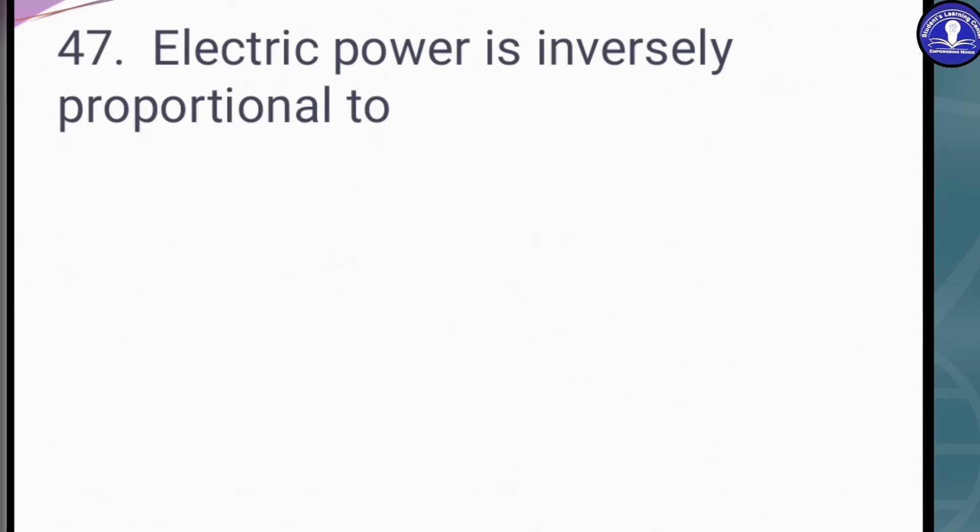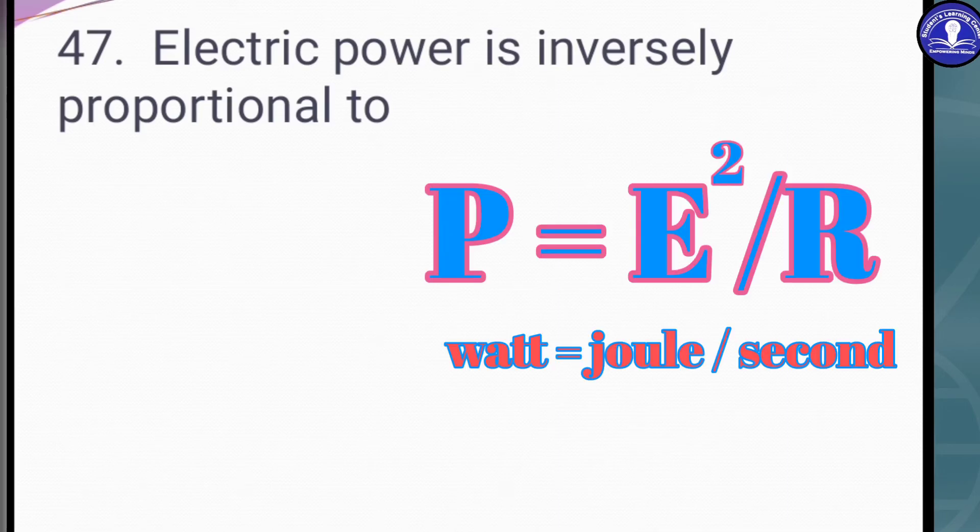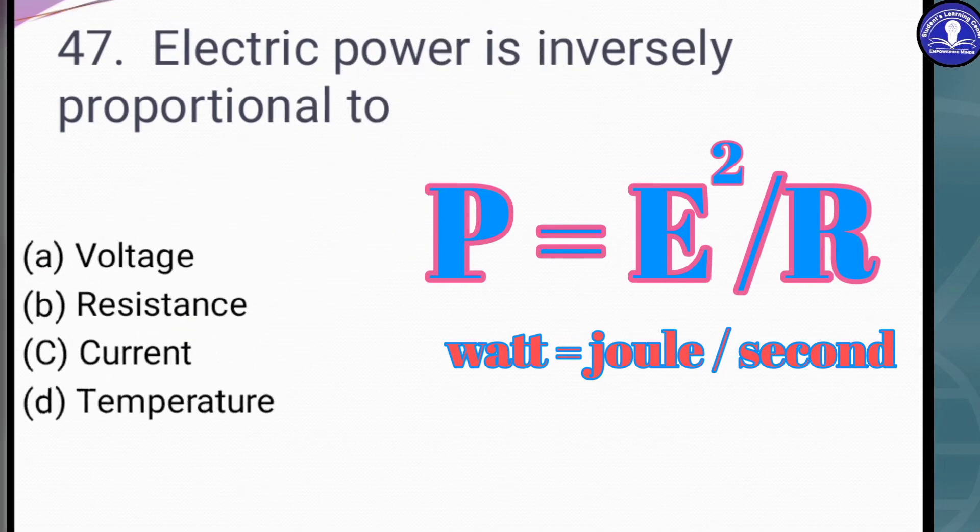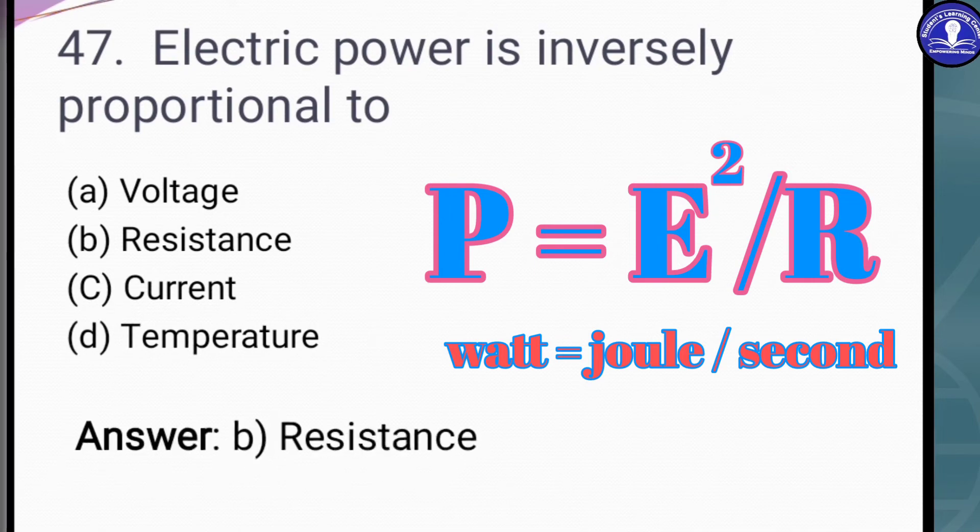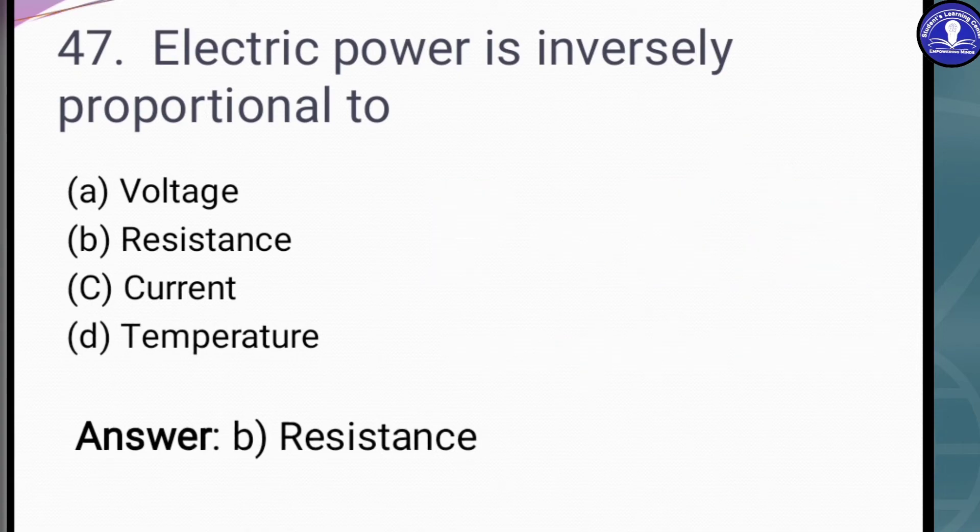Electric power is inversely proportional to - we know the formula P equals E squared by R. P is in the numerator on the left-hand side, R is in the denominator on the right-hand side, so it is inversely proportional to resistance. R represents resistance and E represents EMF or potential difference. The options are voltage, resistance, current, and temperature. The answer is resistance, option B. That is P equals E squared by R.